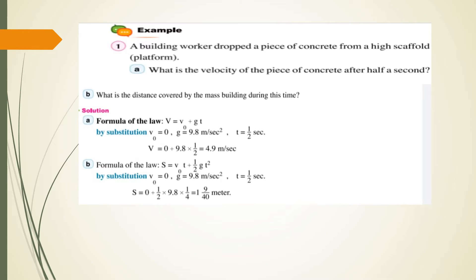V equals V₀ plus gt. V₀ equals 0 and g equals 9.8 meters per second squared, and t equals half second. Then V equals 0 plus 9.8 times half equals 4.9 meters per second.